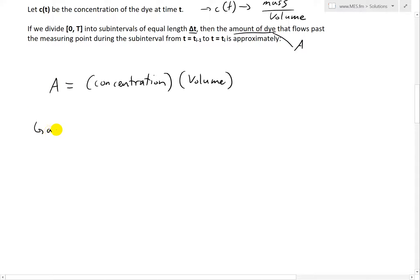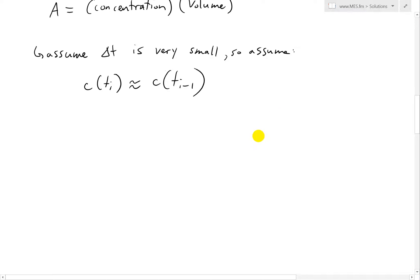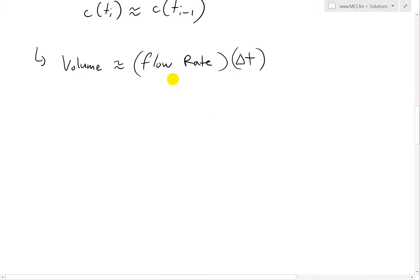We assume that delta t is very small, so we can approximate that the concentration of the blood at t_i is roughly equal to the concentration at t_{i-1}. Under this approximation, the volume of blood over a subinterval is roughly equal to the flow rate F — which has units of volume per time — multiplied by the interval delta t. Multiplying by time gives us volume.